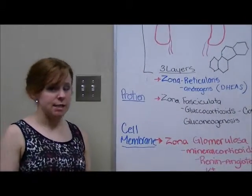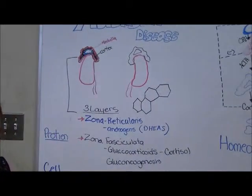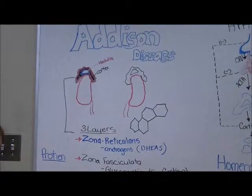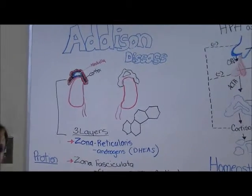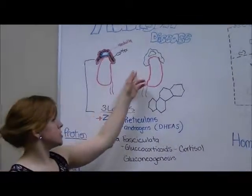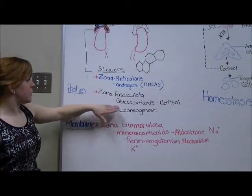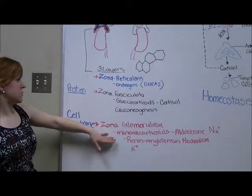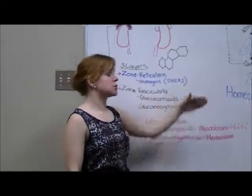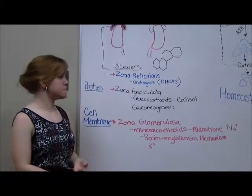In the case of Addison's disease, the adrenal cortex is actually destroyed. Often in Canada, that's from an autoimmune disorder, or it could be from metastatic cancers or a fungal infection. Because the cortex is destroyed, each of its layers and their respective steroid hormones are affected. Androgenic hormones will be decreased, so in females we see decreased pubic and axillary hair.